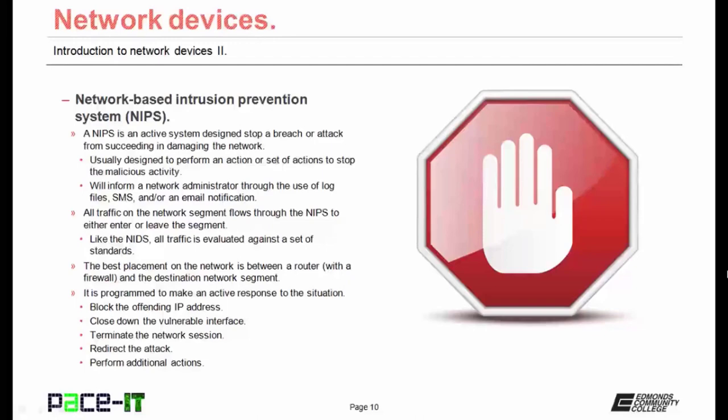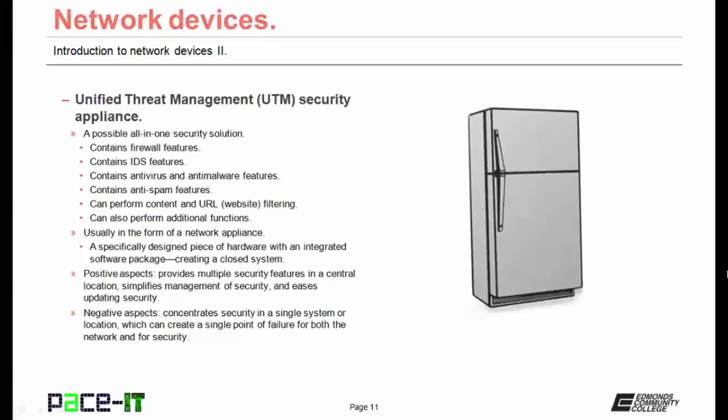The NIPS is programmed to make an active response to the situation. Some of those responses could include blocking the offending IP address, closing down the vulnerable interface, terminating the network session, or in more advanced systems, redirecting the attack to a honey net. There are additional actions it can perform — it all depends upon how the NIPS is programmed.